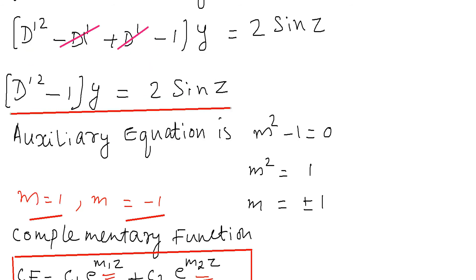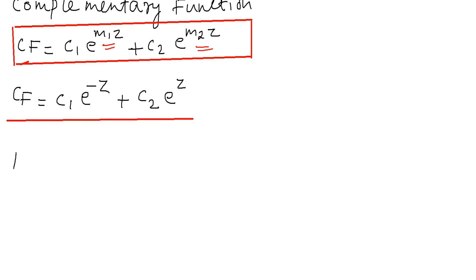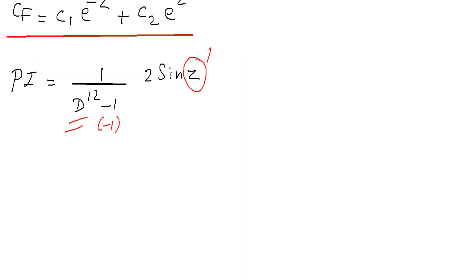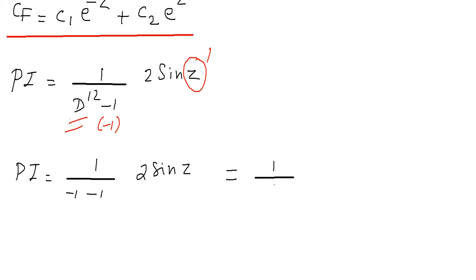Now we find the particular integral: PI = 1/(D'² − 1) × 2 sin z. The coefficient of z in sin z is 1, so we replace D'² with −(1)² = −1. Then PI = 1/(−1 − 1) × 2 sin z = 1/(−2) × 2 sin z. Therefore, the particular integral is −sin z.